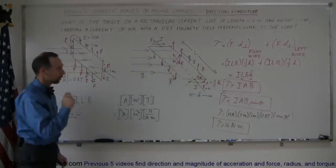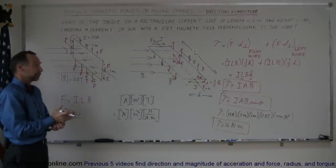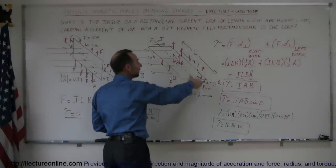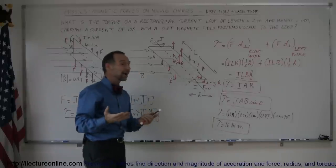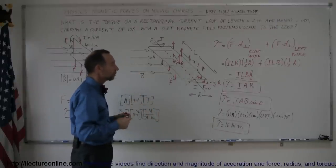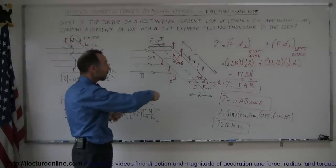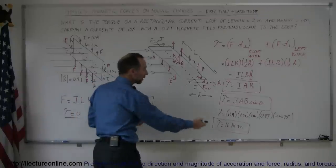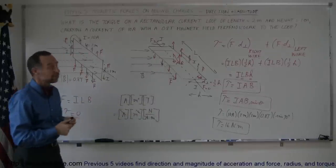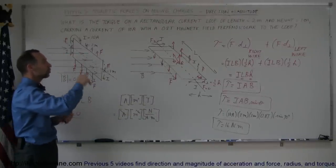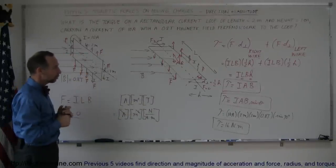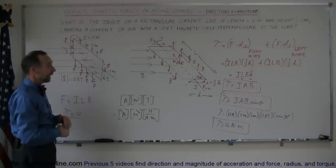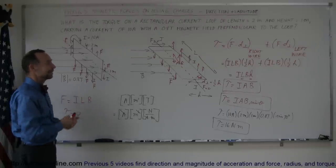What is the direction of the torque? Since the force is pulling one side up and the other side down, this is a counterclockwise direction. You have to define whether clockwise or counterclockwise is positive. The book typically calls counterclockwise direction as positive and clockwise as negative. So using the direction of the torque, this is a positive 16 Newton meters, assuming that counterclockwise motion of that current loop is considered a positive torque. That's how you figure out the forces and torques on a current carrying loop inside a magnetic field.